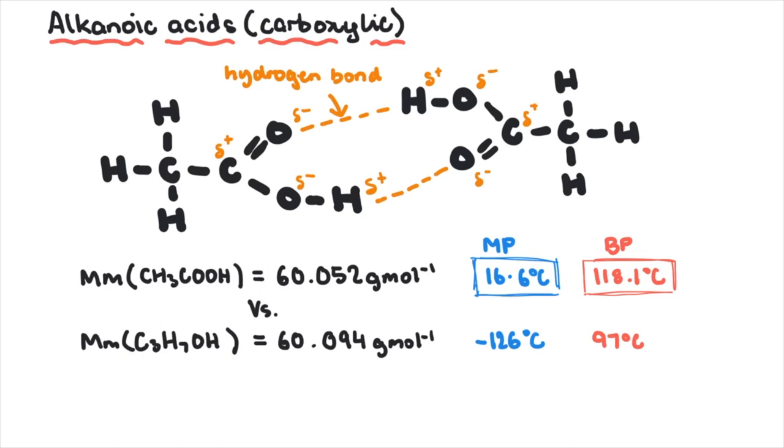In fact, the hydrogen bonding between acetic acid molecules is particularly strong, as experiments have shown that stable pairs of acetic acid molecules, also known as dimers, are present in the liquid. These dimers tend to break down on heating.